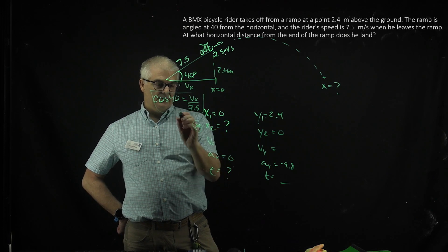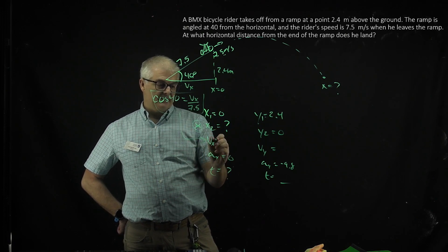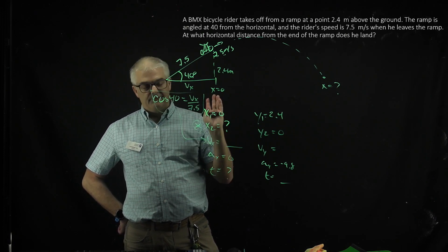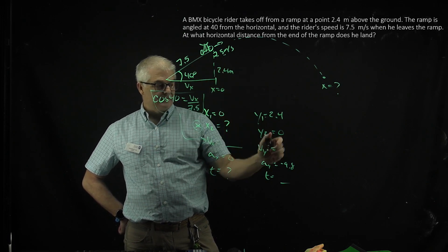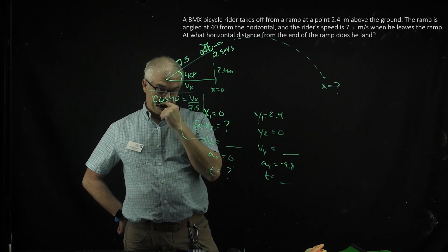That's going to give you this number, and I would jot it down once you find that and put it here. The vy is the same thing, except instead of cos, it would be sine, because this is the opposite over the hypotenuse. Find that number. Got it?